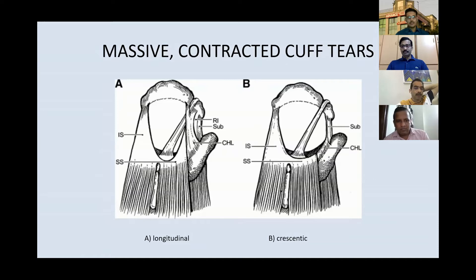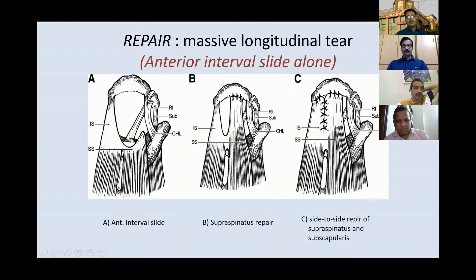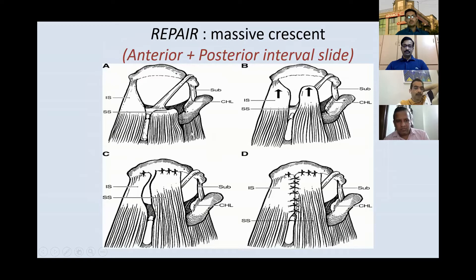For a massive longitudinal tear, they cut down the coracohumeral ligament area — basically releasing the rotator interval tissue — which increases mobility of the remaining supraspinatus, allowing direct repair. This was called the anterior interval slide. For a massive crescent tear, they performed both anterior and posterior interval slides and then repaired it direct and side to side.